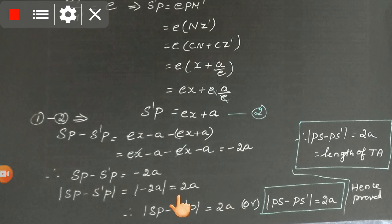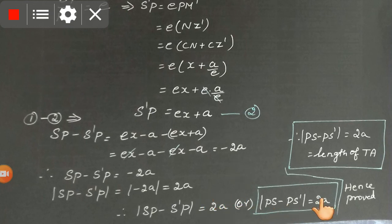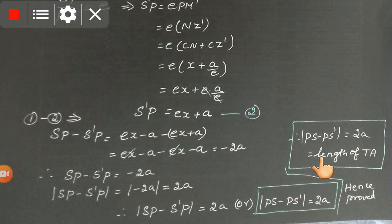We have got the answer 2a. This is nothing but the length of the transverse axis. SP and S'P are the focal distances, and their absolute difference equals 2a, which is the length of the transverse axis. Hence proved. Thank you children.